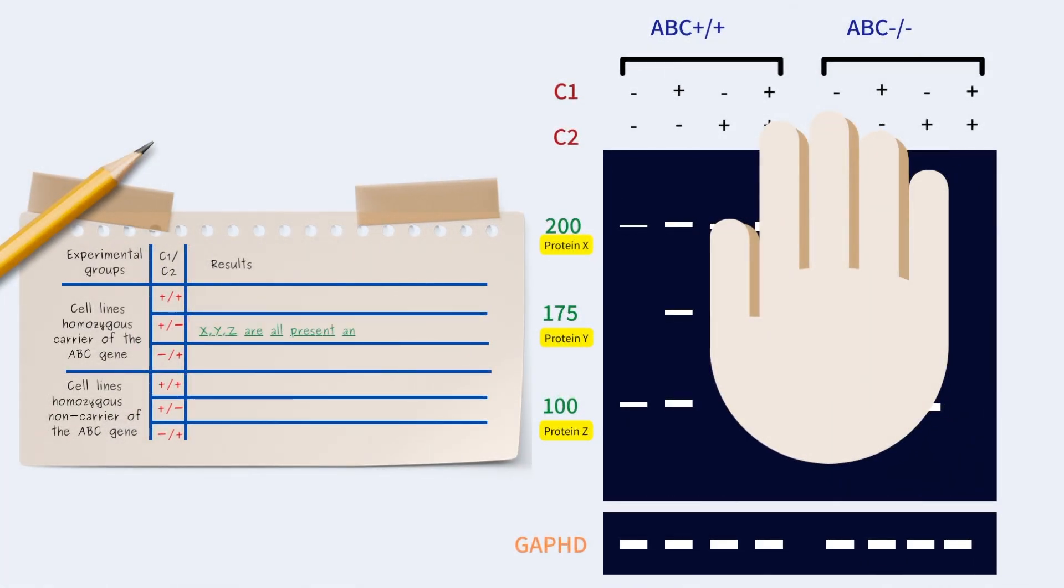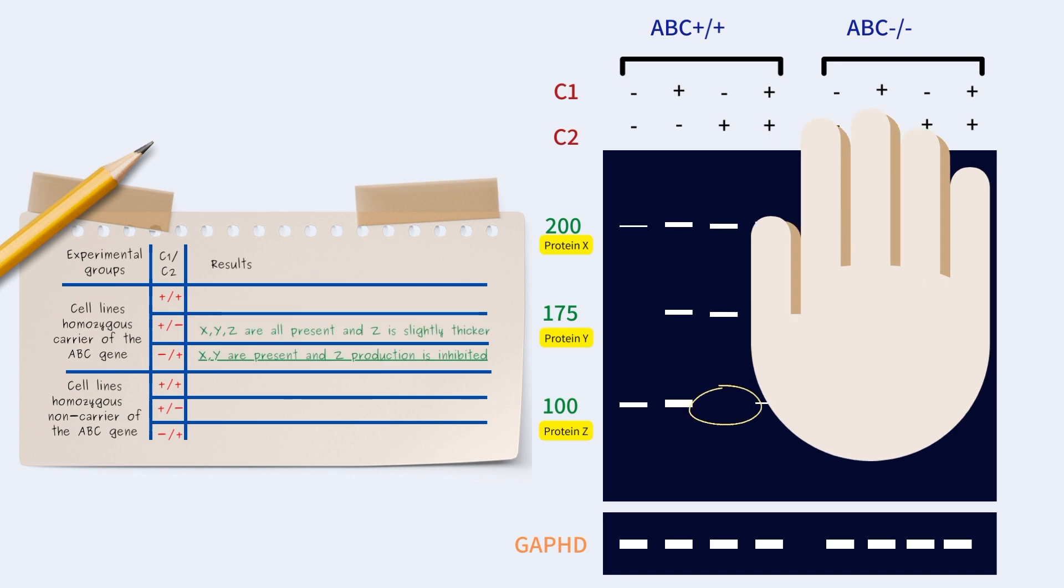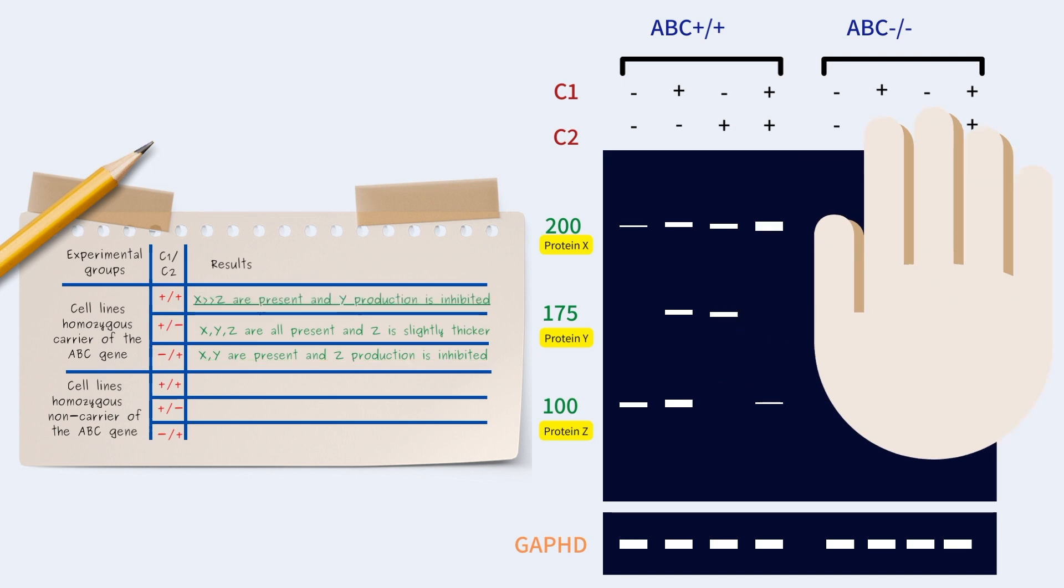Back to axis number three. Let's get to reading the actual results. This blot is detecting the presence of protein X, Y, and Z. Using your hand as a guide, let's look at the protein production of an ABC carrying cell when chemical C1 is added. Reading vertically, we see that white lines appear at the three protein horizons. And we see a slightly thicker line at protein Z. Moving on to the next lane, an ABC gene carrying cell with chemical C2 added instead has the presence of protein X and Y, but no protein Z is detected.